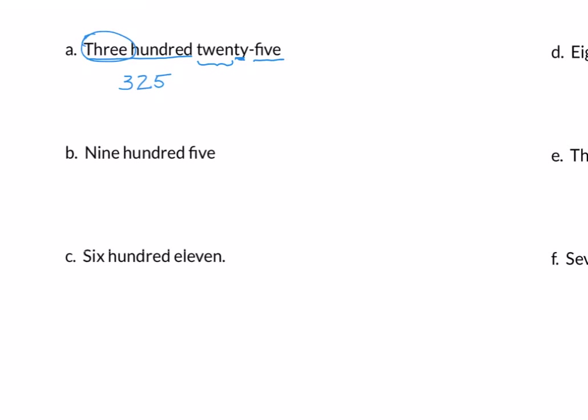Example b: we have nine hundred five. We have the word 'hundred,' so nine goes in the left column. There is no 'ty' or 'teen,' so we put a zero in the middle column. Then we have five by itself, so five goes in the right column. Nine hundred five is written 9-0-5.